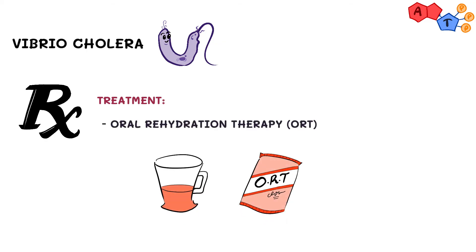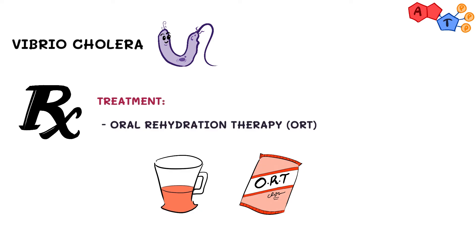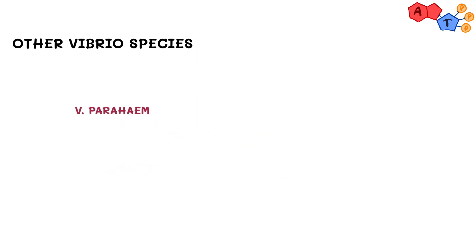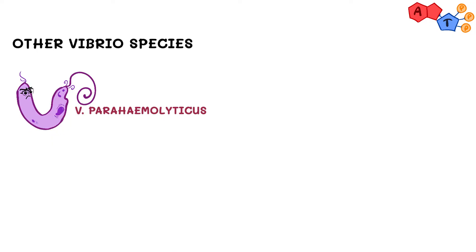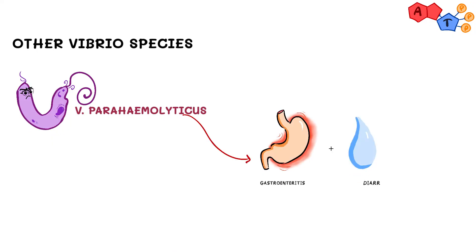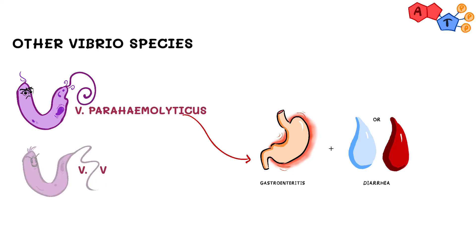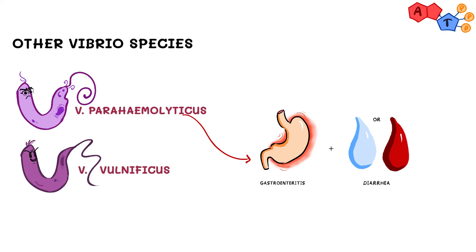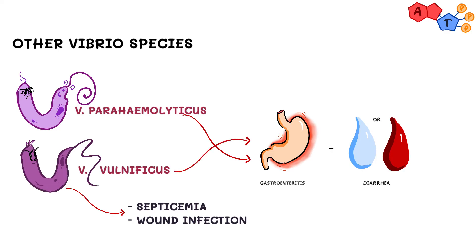There are other clinically important Vibrio species. Vibrio parahemolyticus can cause acute gastroenteritis with diarrhea that may be watery or bloody. Vibrio vulnificus can cause septicemia, wound infection, or gastroenteritis.